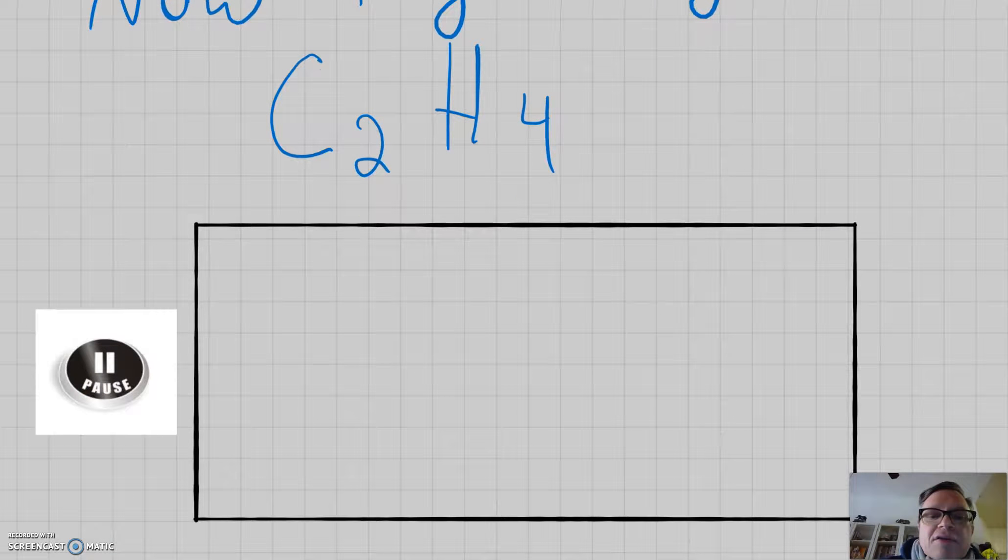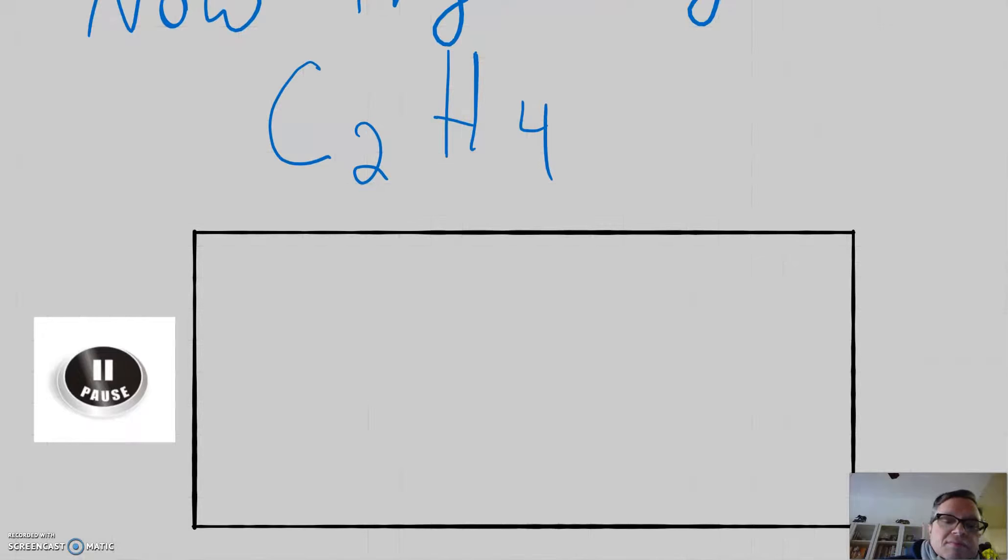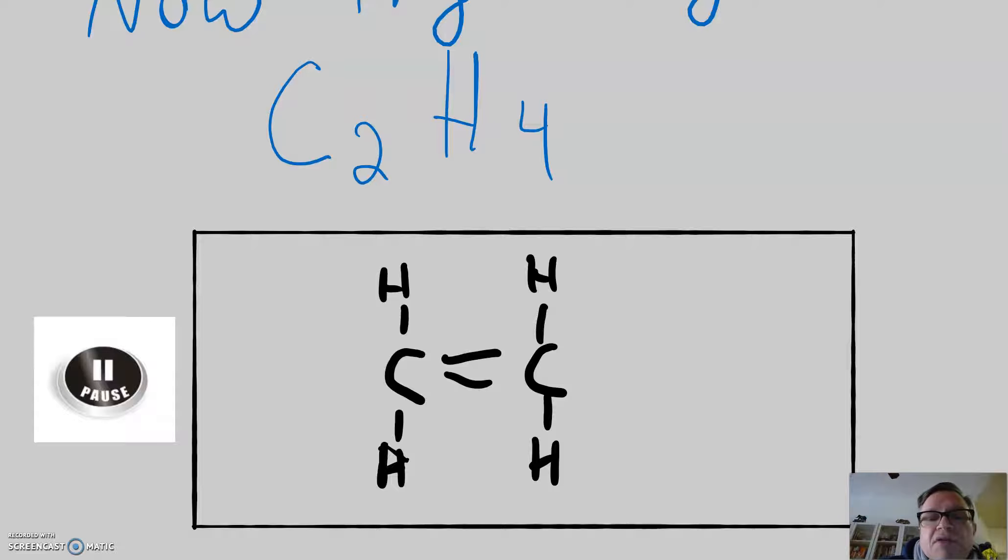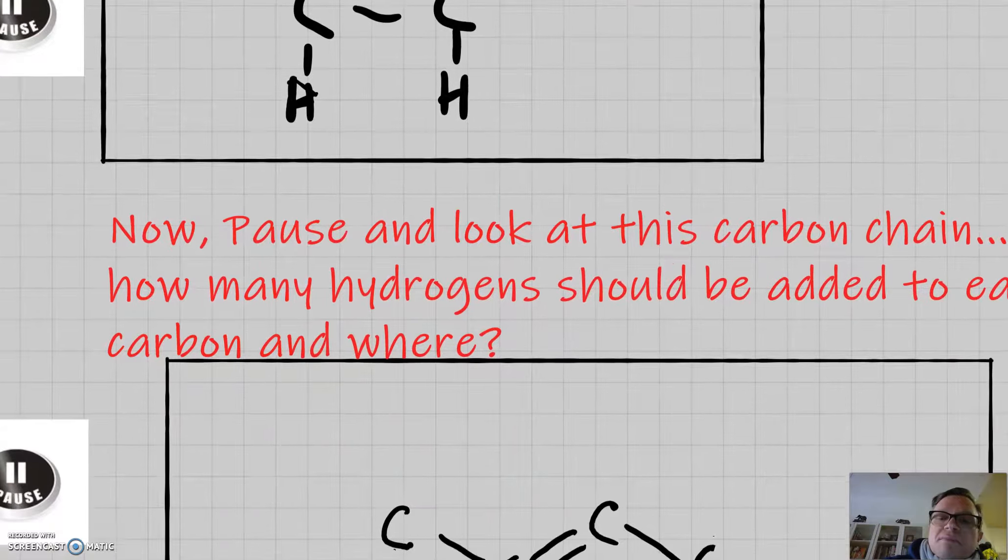Next try ethylene, C2H4. So, we have two carbons and we have four hydrogens. Now, if we've got four hydrogens, that means we can only have two on each carbon. And so that means we need to have a double bond between the two carbons because each carbon needs to have eight electrons or four bonds around it.